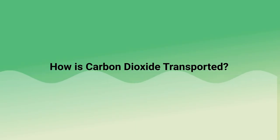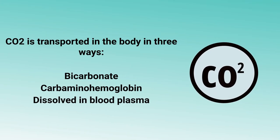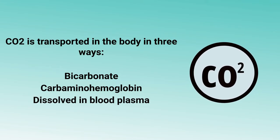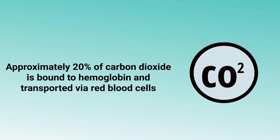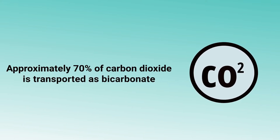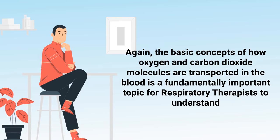How is carbon dioxide transported? CO2 is transported in the body in three ways: bicarbonate, carbaminohemoglobin, or dissolved in blood plasma. Approximately 10 percent of carbon dioxide is transported by dissolving and diffusing into blood plasma. Approximately 20 percent is bound to hemoglobin and transported via red blood cells. And approximately 70 percent of carbon dioxide is transported as bicarbonate.